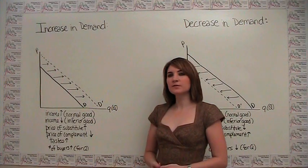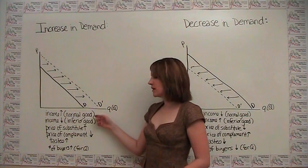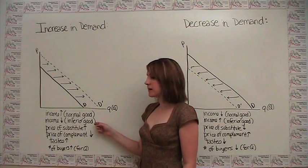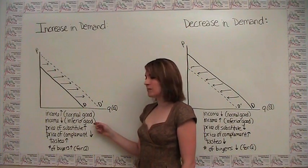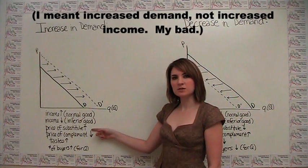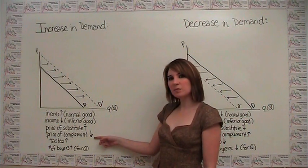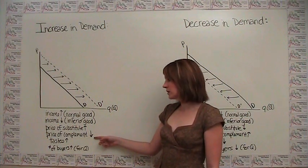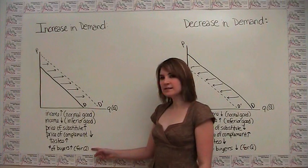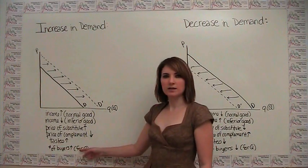You'll notice that there are a number of different ways that we can get an increase in demand. We get an increase in demand if we have increased income and we're talking about a normal good. We get an increase in demand if we have decreased income and we're talking about an inferior good. We get increased income if a price of a substitute increases. We get increased demand if the price of a complement decreases. Or if we have an increased taste for a particular item. Lastly, in the case of market demand, if the number of buyers in our market increases.